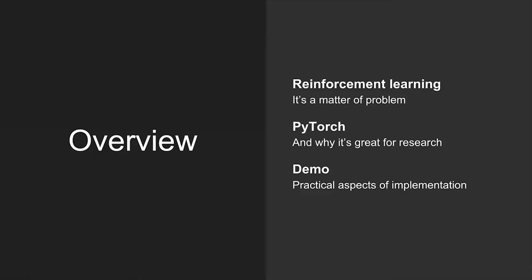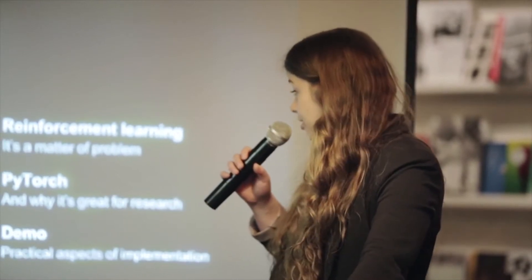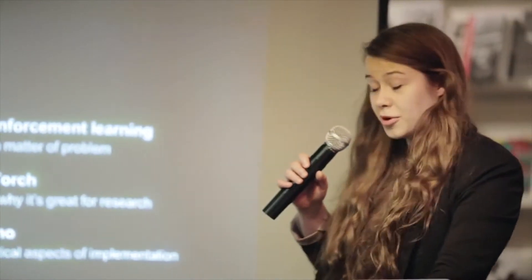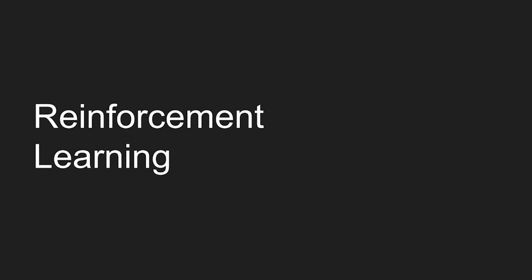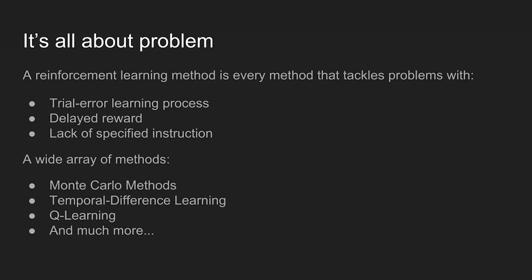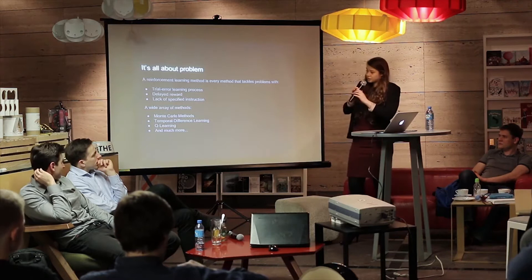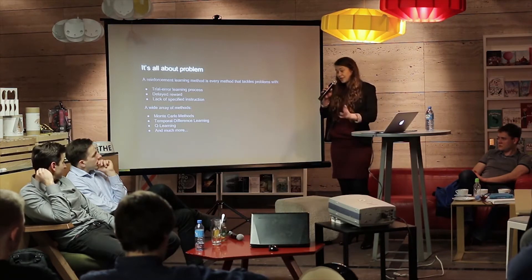First of all we will cover reinforcement learning — how it's done in the simplest form, how it's done now, where it all started, and then something about PyTorch. The best way to start is to define the problem. According to Sutton and Barto in their book, reinforcement learning is defined as every method that tackles a specified problem with three basic characteristics.